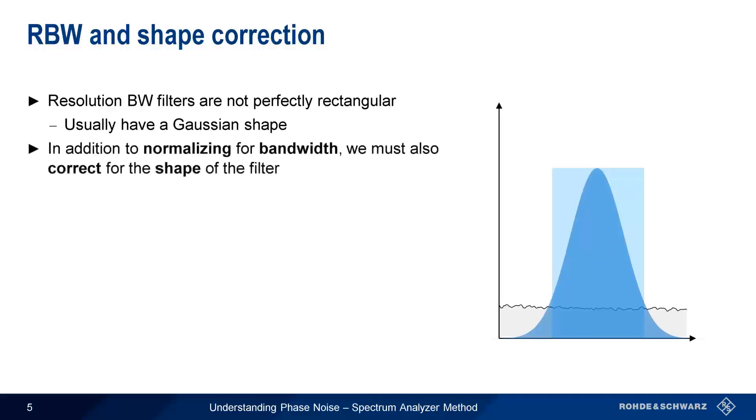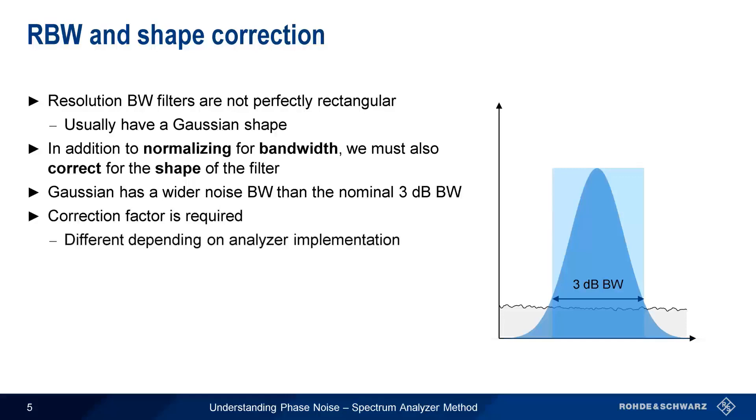So in addition to normalizing for the bandwidth, we also have to correct for the shape of the filter. For a given resolution bandwidth, a Gaussian filter has a wider noise bandwidth than its nominal, or 3 dB bandwidth. This means we have to multiply our filter bandwidth by a scaling factor before normalization. The correction factor is implementation dependent. For example, the shape correction for this particular 3 kHz filter is 1.165. So in calculating N, we first multiply our nominal filter width by 1.165 before taking the logarithm.